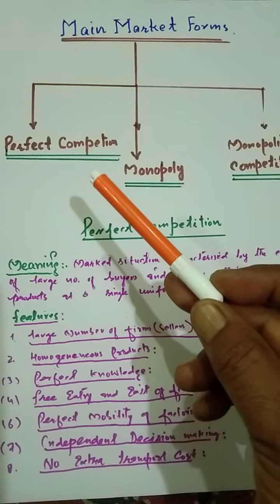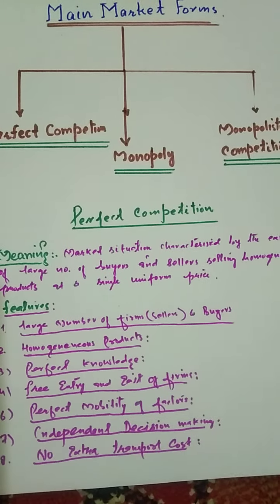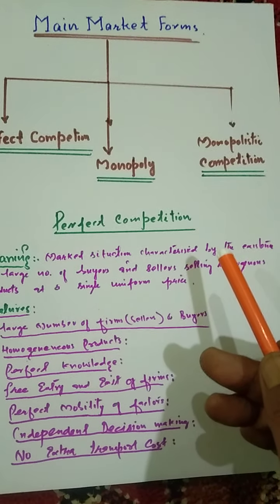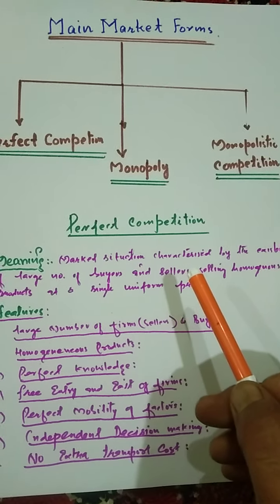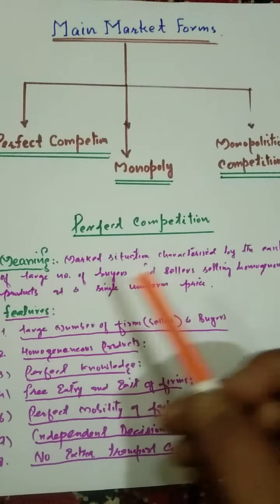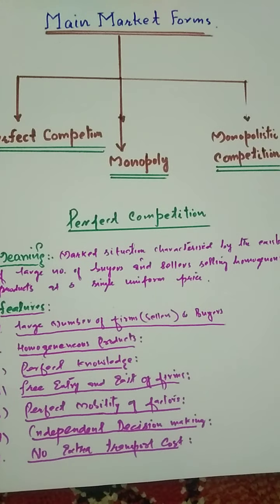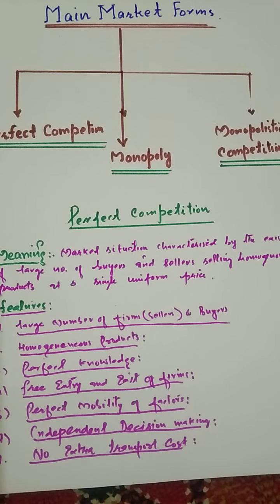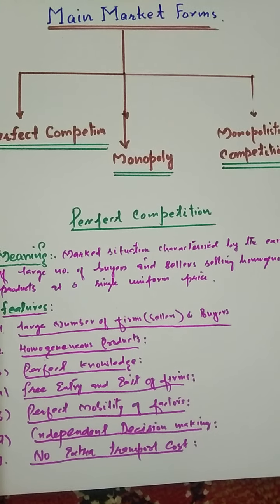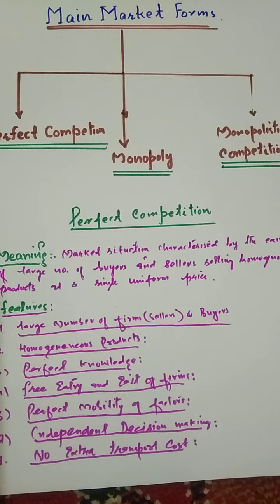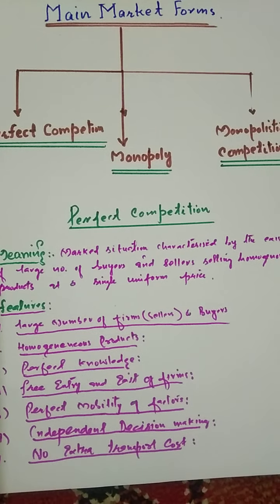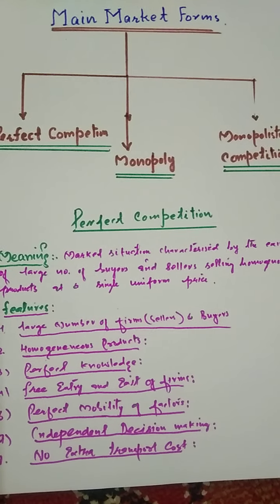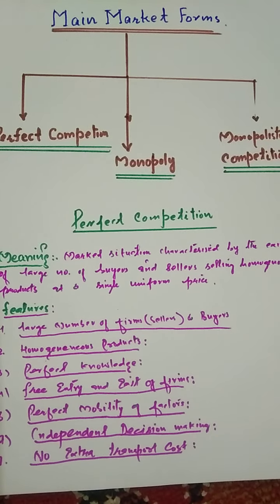Perfect competition is a market situation characterized by the existence of a large number of buyers and sellers selling homogeneous products. Buyers have to buy these homogeneous products and the price is determined by the industry — that is, the market forces of supply and demand. There is one price that prevails in the market and all firms sell the product at that prevailing price.